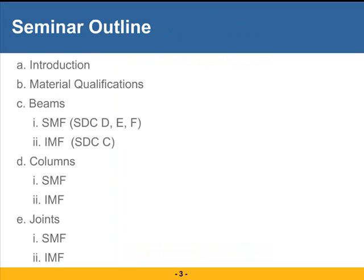So, today there is an introductory section where I want to touch upon very basic things where I think I need to start. Then I will go into the restrictions on materials that are placed if we want to use concrete in an intermediate or a special moment frame, and then we will talk about the components of a frame, which would be beams, columns, and joints.